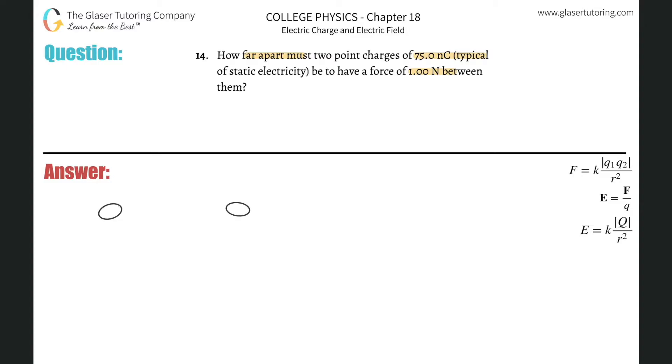So they're both going to be, it doesn't matter if it's positive or negative, they're both going to have a value of about 75 nanocoulombs, and we're trying to find the distance between them, r. r is something, but they tell us the force between them is going to be one newton.